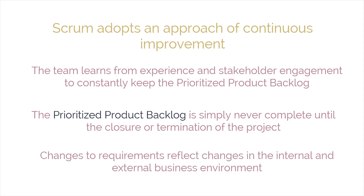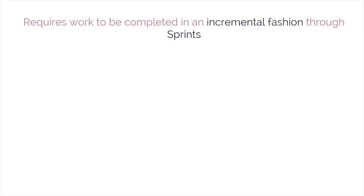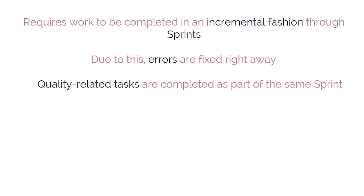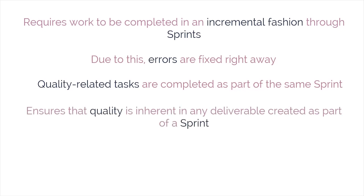The prioritized product backlog is never complete until the closure or termination of the project. Any changes to requirements reflect changes in the internal and external business environment, allowing the team to continually work and adapt. Through repetitive testing, Scrum requires work to be completed incrementally through sprints rather than waiting until the end to produce deliverables. This means errors get fixed right away. Important quality-related tasks — development, testing, and documentation — are completed as part of the same sprint by the same team.